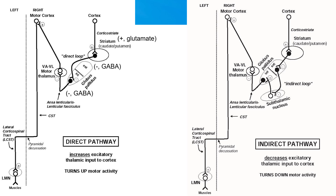The end result of the cortical excitatory input to the striatal neurons of the direct pathway is to increase the excitatory drive from the thalamus to the cortex. You can think of this pathway as turning the motor system up — the cells in the VA-VL nucleus and the motor cortex increase their firing, resulting in increased activity in the corticospinal tract and eventually the muscles.